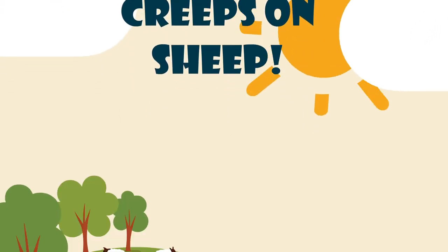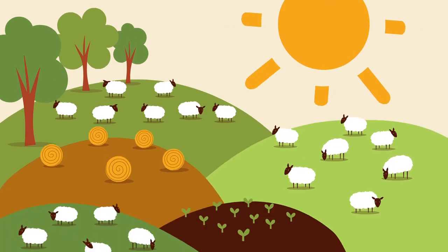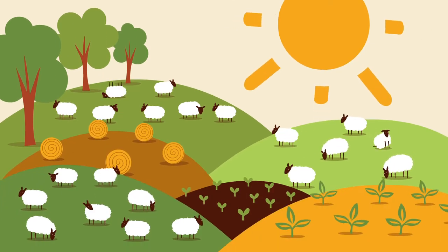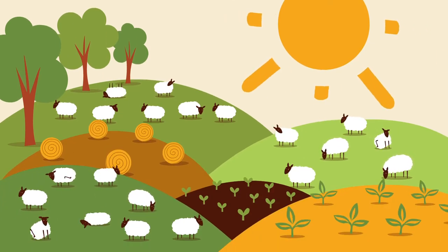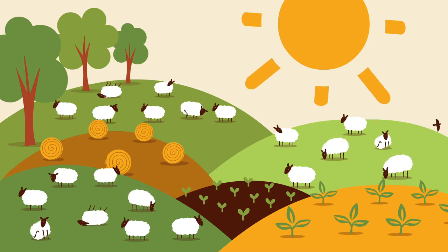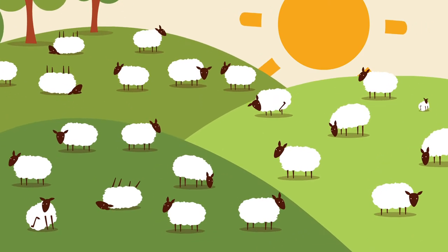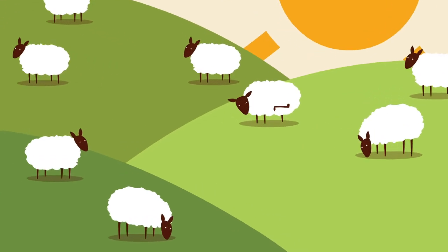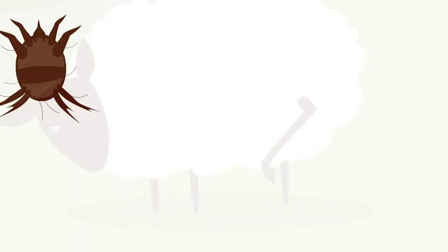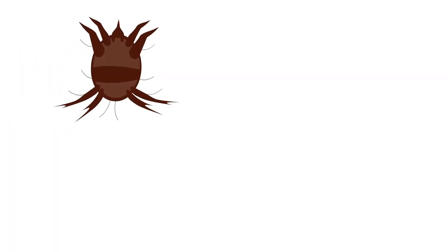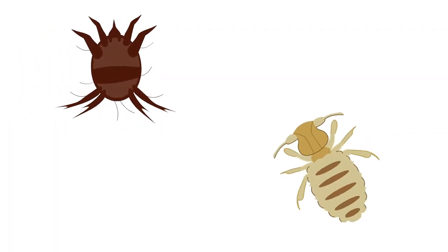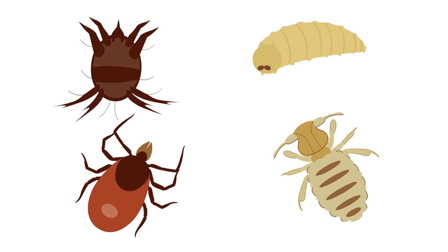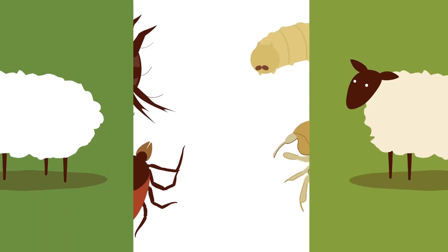Sheep can suffer from a number of different ectoparasites, all of which can cause irritation, disease and even death. They are all a high welfare concern and reduce productivity. The four parasites of most concern are sheep scab mites, lice, ticks and blowfly strike.